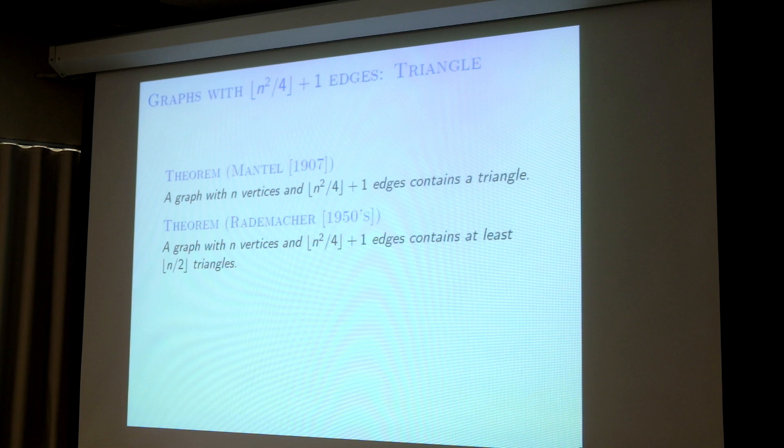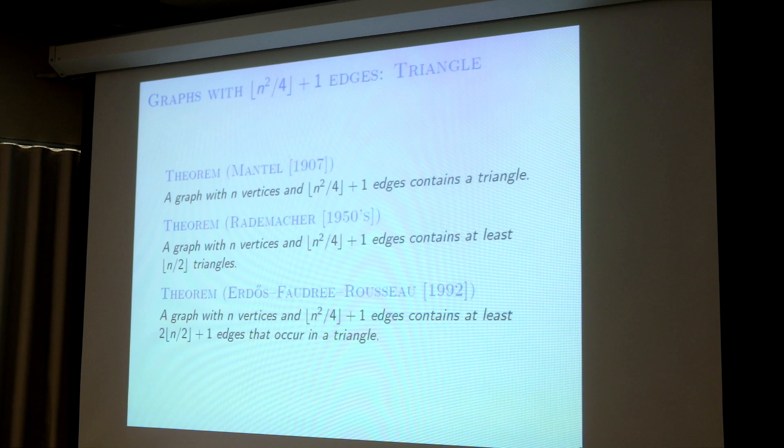And this is sharp just by the complete bipartite graph plus one edge. After that, what question can you ask? Inspired by the title of the talk, you may ask about the number of edges in triangles. So Erdős-Faudree-Roth shows that such graphs contain at least 2 times n/2 + 1 edges that occur in a triangle — so roughly n edges.